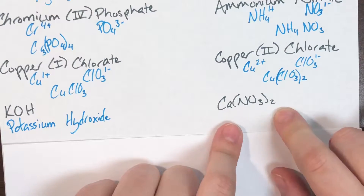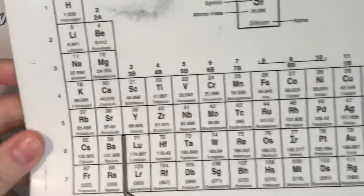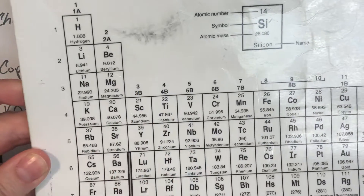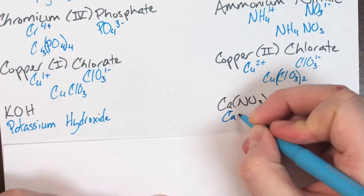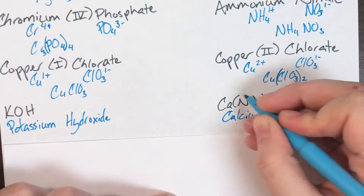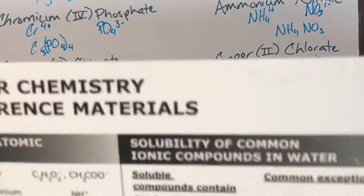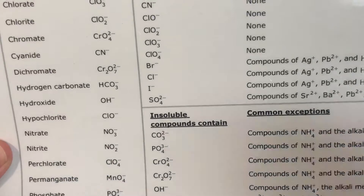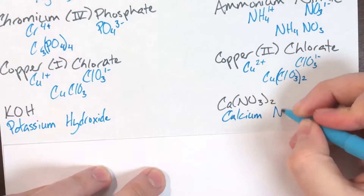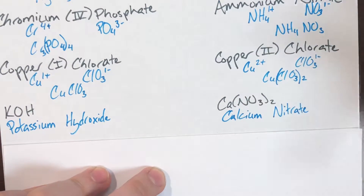Ca(NO₃)₂: Ca is calcium, which is in the first two columns making it a representative metal, so no oxidative state calculation is needed. NO₃ within the parentheses is a polyatomic ion; finding it on the list, NO₃ is nitrate. Nitrate is already the anion name, so the compound name is calcium nitrate.